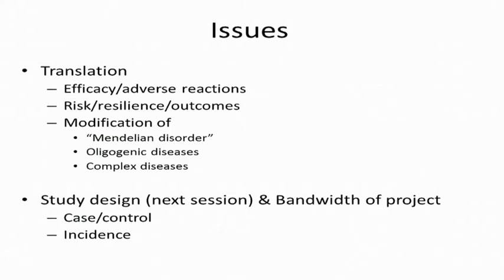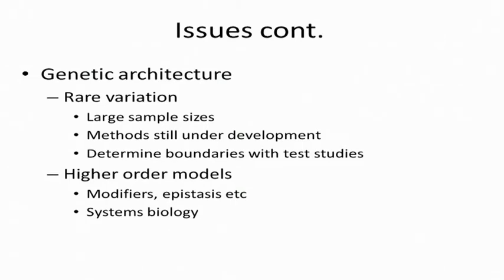The genetic architecture theme centered around discussion of rare variation. Clearly we need large sample sizes — I think there was consensus — and we also talked about the need to develop the mathematical framework of these tests for variation, which is still underdeveloped. We also touched on higher-order models, which think about modifiers, epistasis, and other higher-dimensional data that could be integrated from a systems biology perspective, like we heard from Judy.